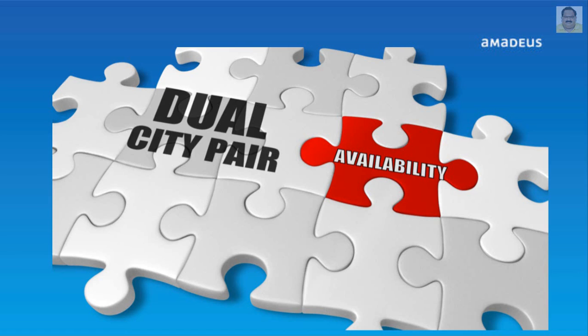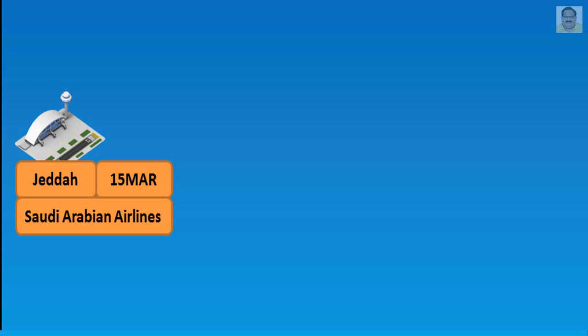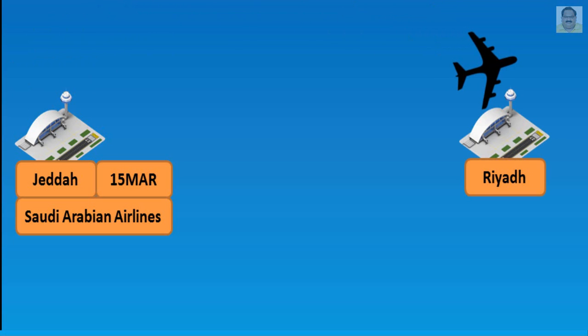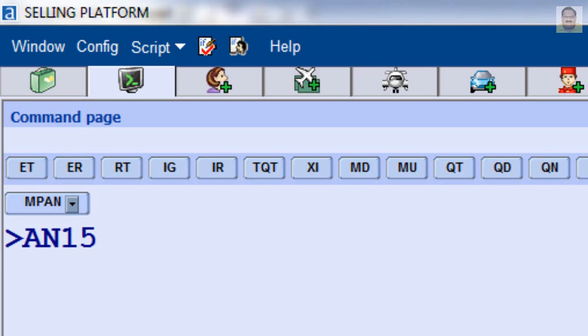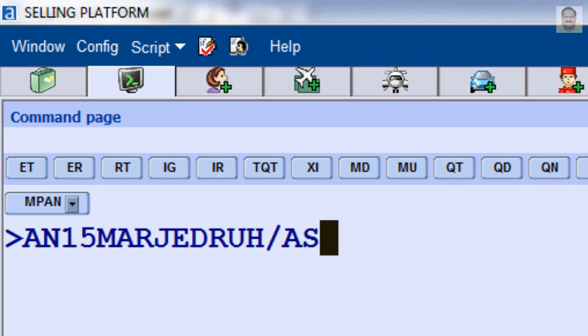The system searches for any combination of non-stop, direct, or connecting flights for each half of the dual city routing. For example, departure from Jeddah to Riyadh by Saudi Arabian Airlines on March 15th and return also by Saudi Airlines from Riyadh on March 18th: enter AN, date March 15th, Jeddah to Riyadh, slash A and airline code SV, asterisk symbol for separation between outbound and inbound flights, and March 18th as return date from Riyadh.